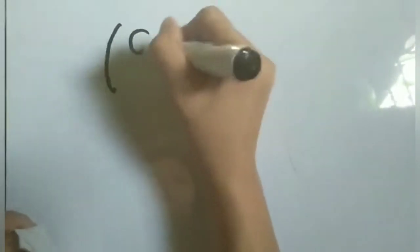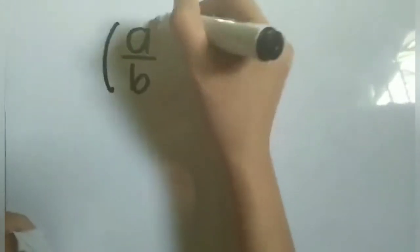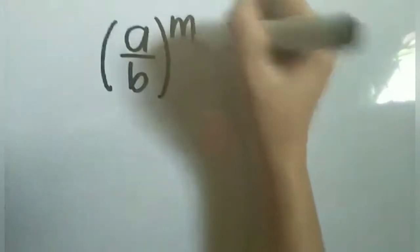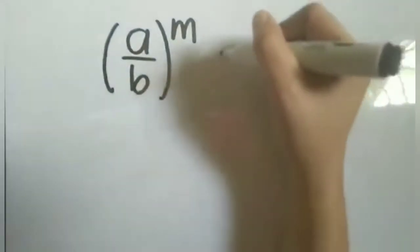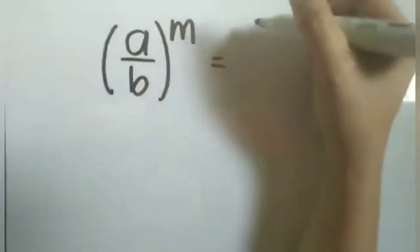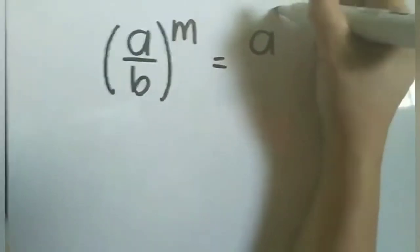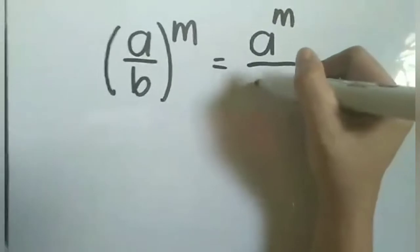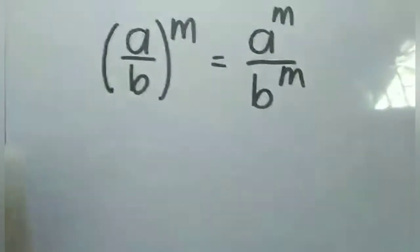So, the quantity a over b, raised to m, is equal to a raised to m over b raised to m.